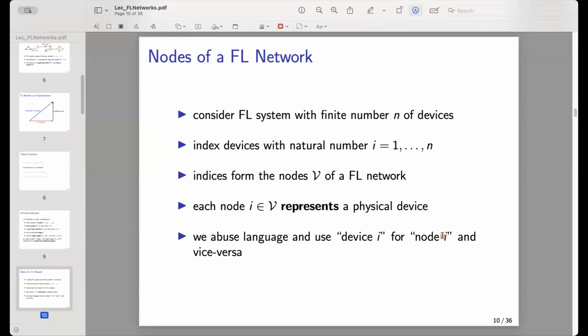A node within a federated learning network is a natural number between 1 and n. But we use this number as a mathematical model for a physical device. So this is the device i that is represented by node i. I hope you will be able to get the intended meaning depending on the context.